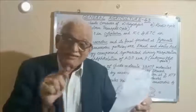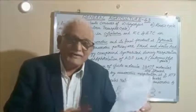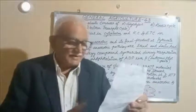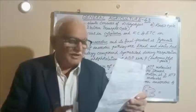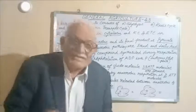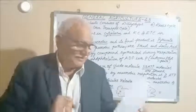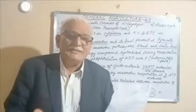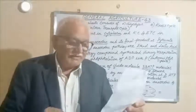Krebs cycle occurs in the matrix of mitochondria. In aerobic conditions, the mineral activator required for aconitase enzyme is iron, which acts as the activator.